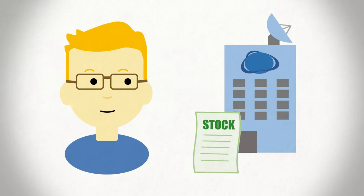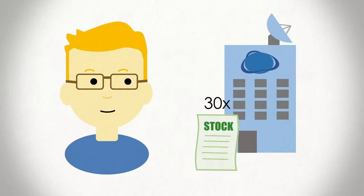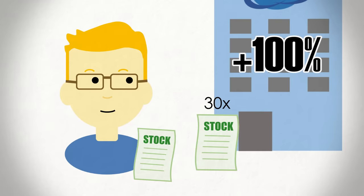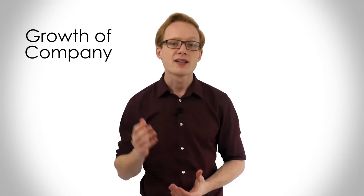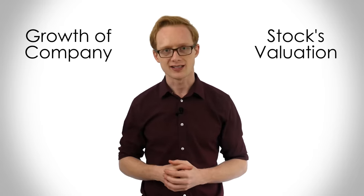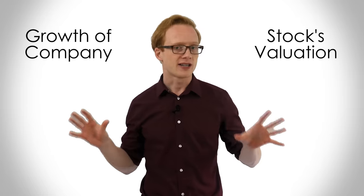For example, imagine a growth investor finds a tech company that's trading at a PE multiple of 30 times. While this multiple may seem expensive, the investor might buy the stock if they see that the underlying company is growing rapidly. If the company doubles its operations in a couple of years, the stock won't seem so expensive for what the investor paid for it. So the growth of the underlying company and the valuation of its stock are two key characteristics of value and growth investing. And each style focuses on one of these two characteristics.